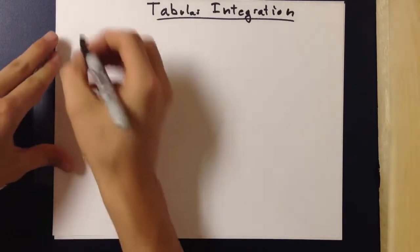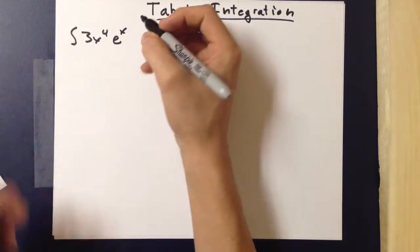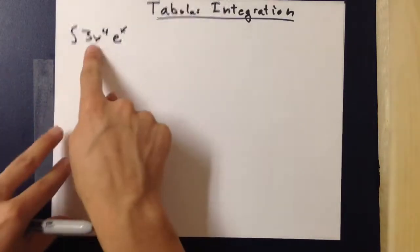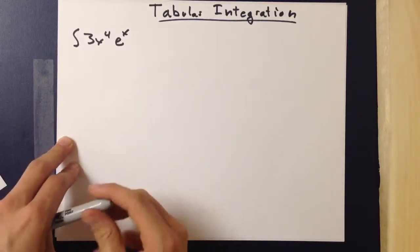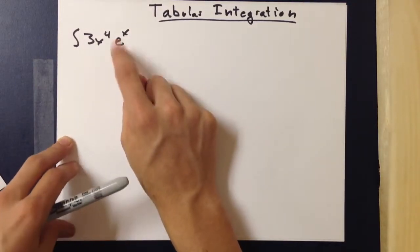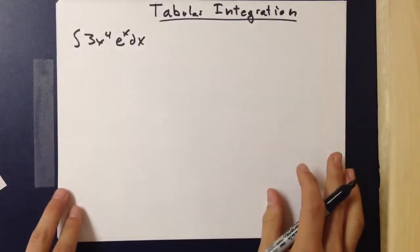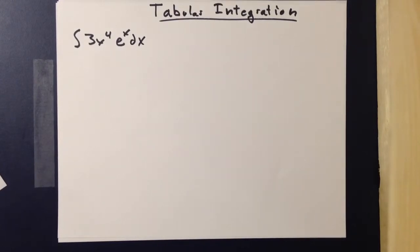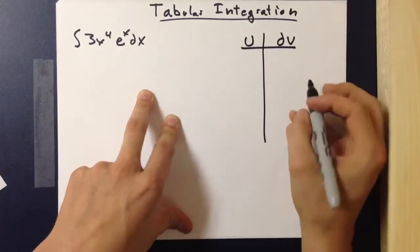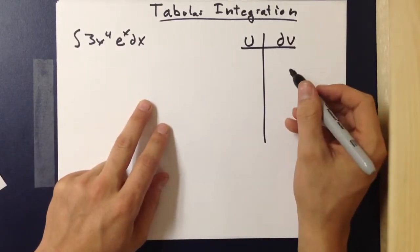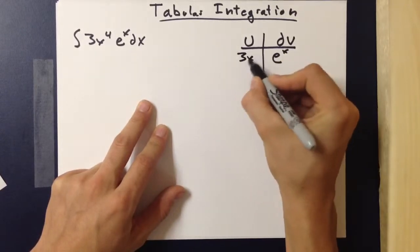In the previous example, 3x to the fourth times e to the x — 3x to the fourth derives to zero by various derivatives, and e to the x never goes away, because its derivative and integral is always e to the x. So it is easy to make a chart with u and dv, where dv by LIATE would be e to the x and u would be 3x to the fourth.